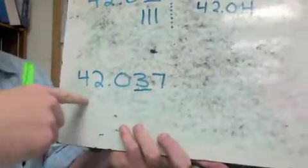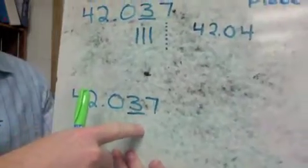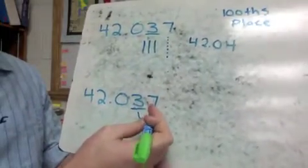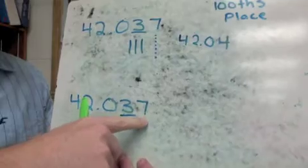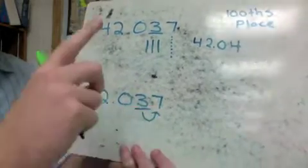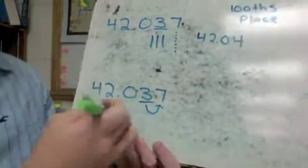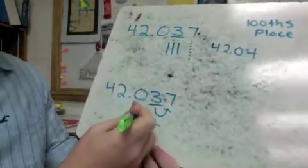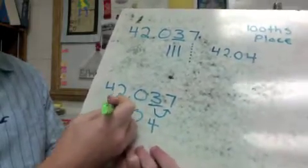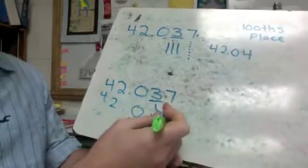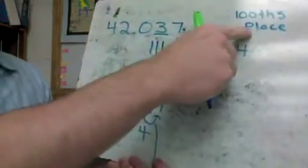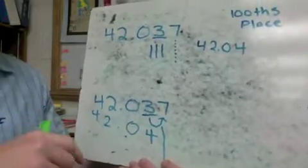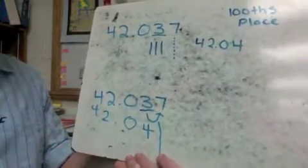If I look at the other method, I underline the hundredths place because that's what I'm rounding to, then look to the right. That 7 is 5 or above, so that tells me to round the number up — this number becomes a 4. The other numbers all stay the same, and I cut it off after the hundredths place. My answer is 42 and 4 hundredths.